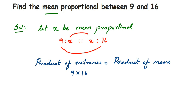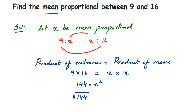So 9 multiplied by 16 equals 144, which means x² = 144. To find x, we take the square root of 144. You can use trial and error — which number multiplied by itself gives 144? It is 12, since 12 × 12 = 144. Therefore, x = 12, which is the mean proportional between 9 and 16.